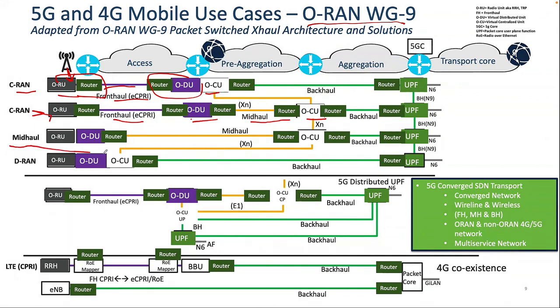Another deployment you will see — and based on what I'm hearing from operators, most deployment will be mid-haul — is where you have a backhaul provider in the middle with a transport network, and the CU sits at a central site. Centralization helps from a resources perspective.